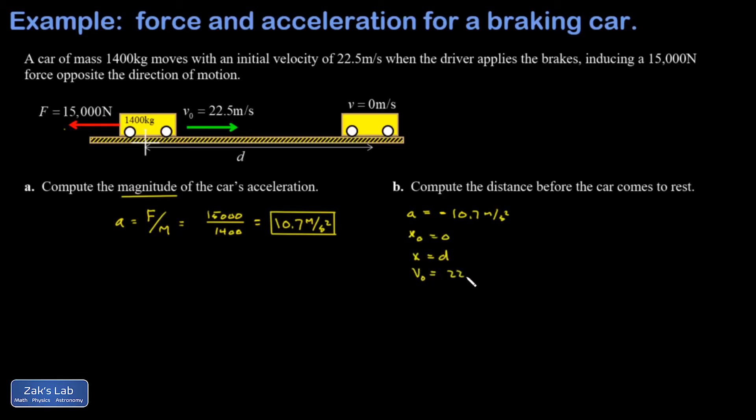My initial velocity is 22 and a half meters per second and my final velocity, well this car is braking until it comes to a stop so that's zero meters per second. So as I'm working out the kinematics there's a couple approaches to it. One would be to find the time it takes the car to stop and then